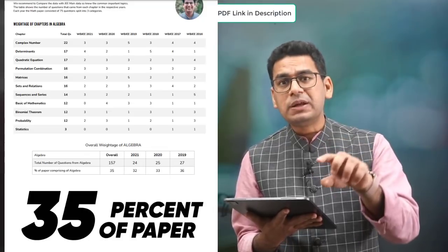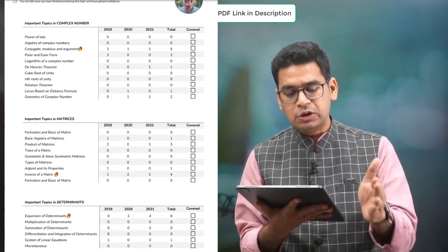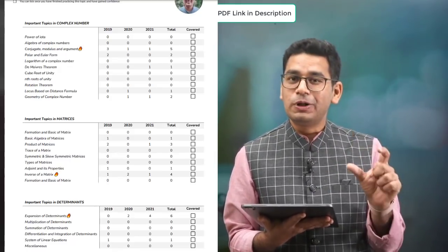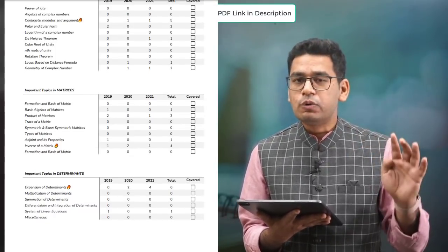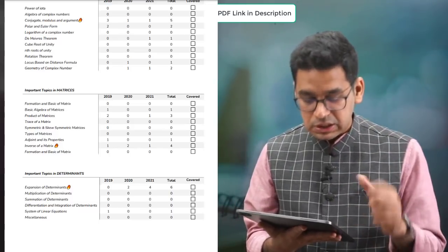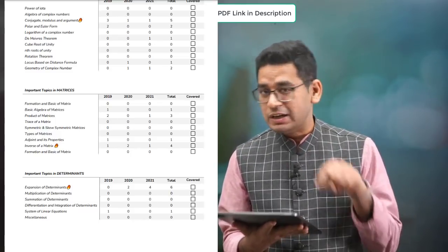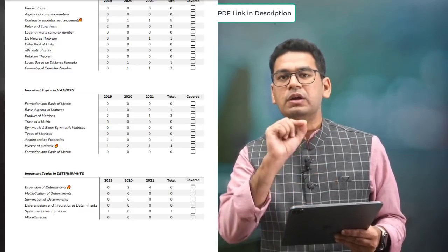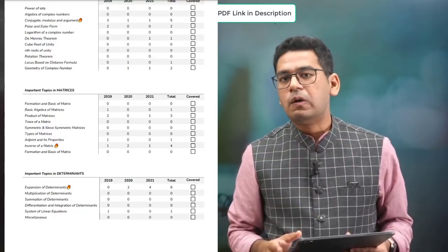Let's talk about details. Complex numbers are very important here. We are giving you detailed analysis of which topic is important: conjugate, modulus and argument. Five questions have been asked in the last three years, making it much more important — and this topic is also important at JE Mains. For matrices, the inverse of a matrix is the most important topic with four questions — though it is not as important in JE Mains, here it becomes very important. For determinants, expansion of determinants is the most important topic, whereas system of linear equations is the most important in JE Mains but not here. We also have a column called 'covered' — as you cover each topic, tick mark it to track which important WBJE topics are prepared.